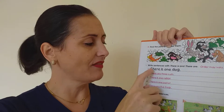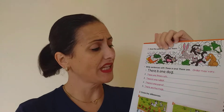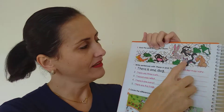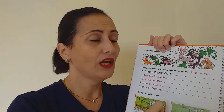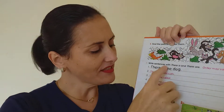Nós vamos formar as frases. Number one, de acordo com os pets acima: There is one dog. Number two, there are three cats. Count with me: one, two, three. We use there are. Nós vamos usar o there are. There are three cats. Nós vamos continuar nas próximas frases.